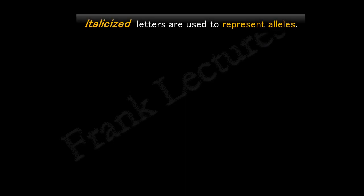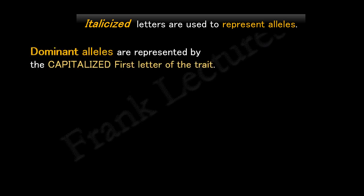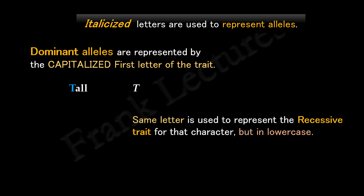To understand these hypotheses better, let's learn how geneticists represent genes or alleles in organisms. In genetics, we use italicized letters to represent alleles. Dominant alleles are designated by the first letter of the trait as a capital letter. For example, tall stem length is the dominant trait, so the dominant allele is represented by capital T. The recessive allele is also indicated by the first letter of the dominant trait, but written in lowercase — so dwarf stem length is represented by small t. Capital T represents the tall allele, which is dominant, and small t represents the dwarf allele, which is recessive.